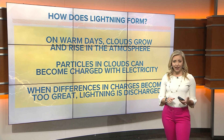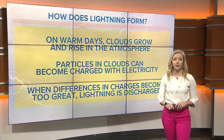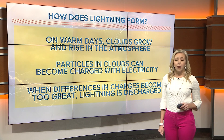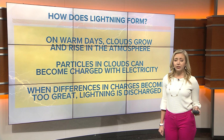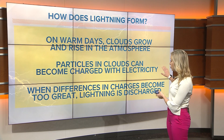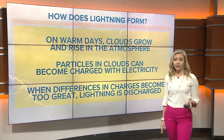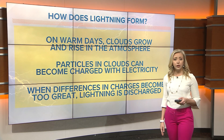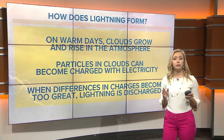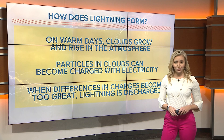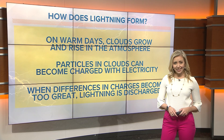On warm days, clouds can grow and rise in the atmosphere and they can produce thunderstorms. Particles in those clouds can become charged with electricity. When the differences between those charges becomes too great, a burst of electricity is discharged as lightning.